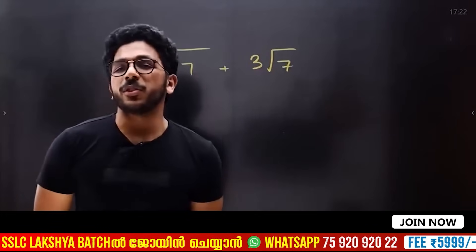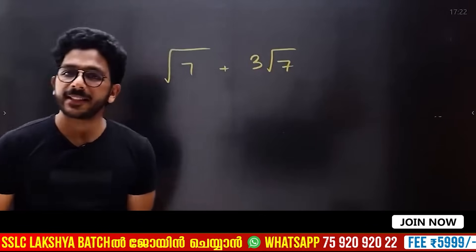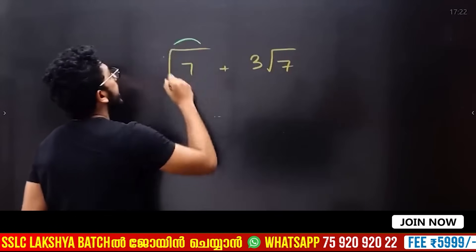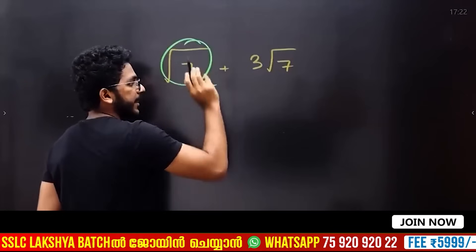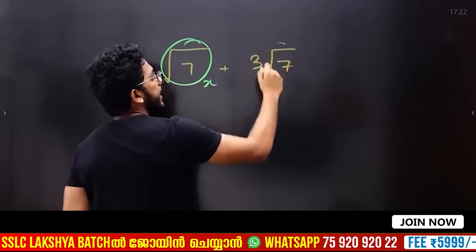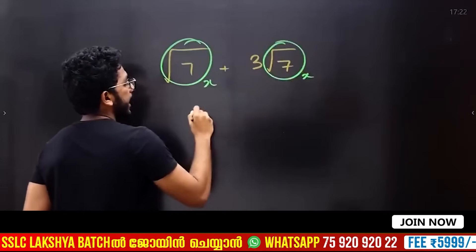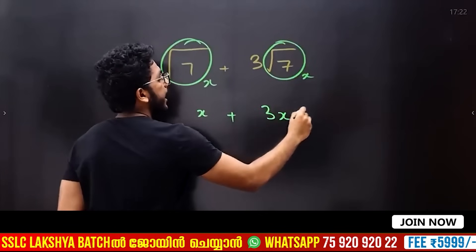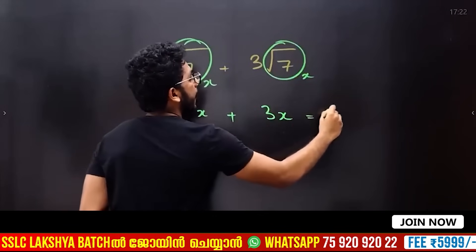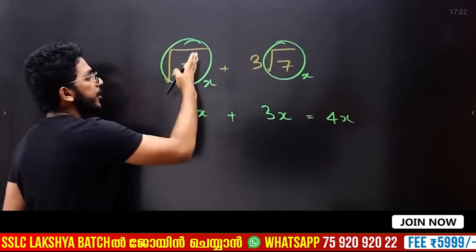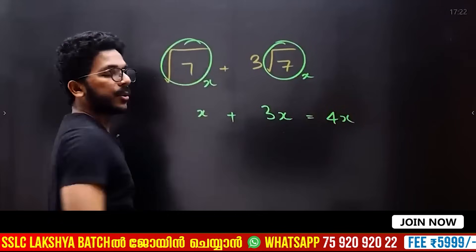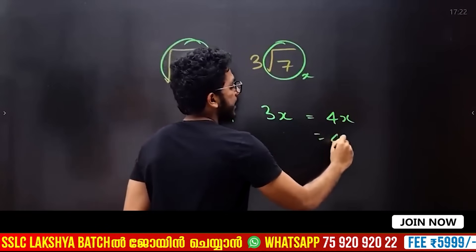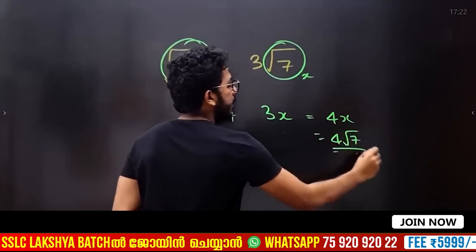Route seven plus three root seven — that's what you say. In my hand there is one apple: one x. Here I have three x. That's one apple plus three apples equals four apples. One root seven plus three root seven — that's four root seven.